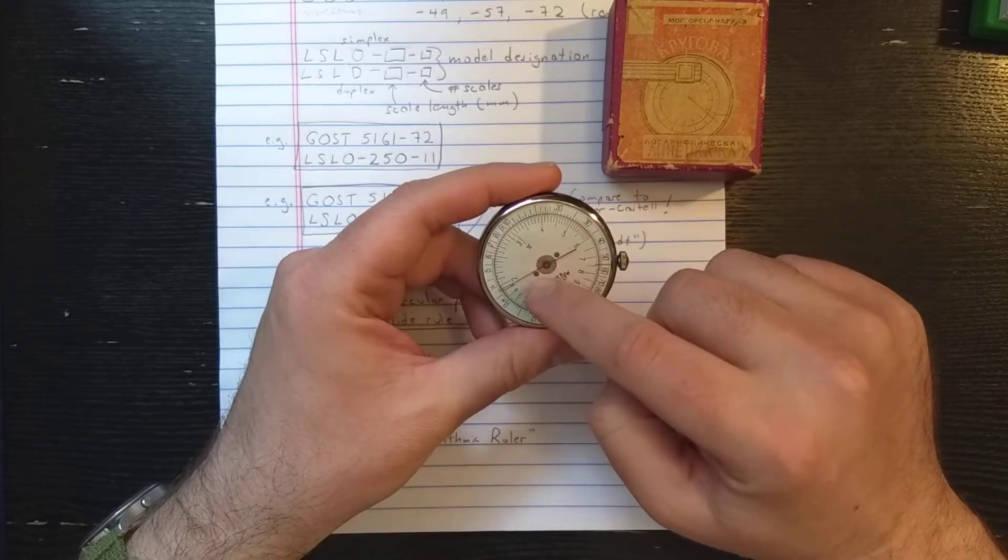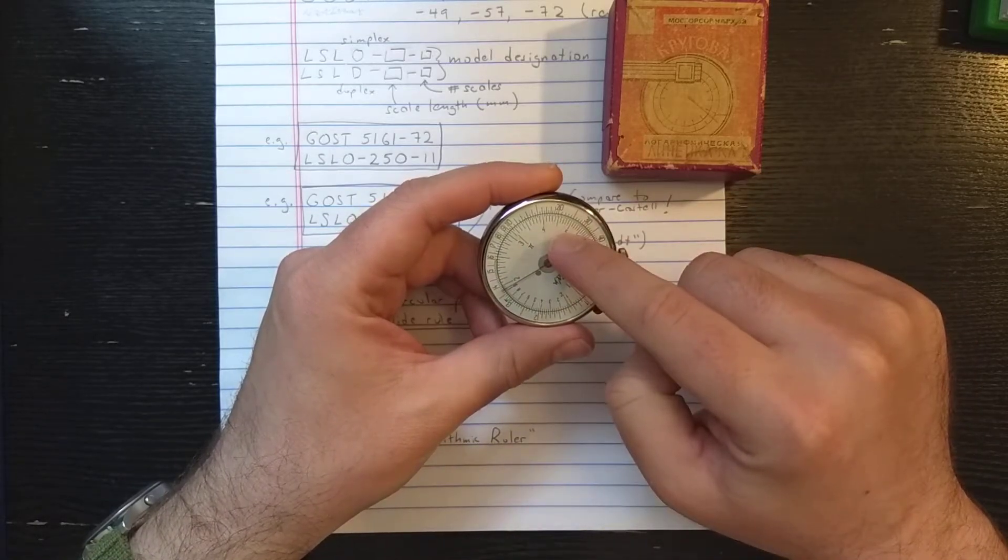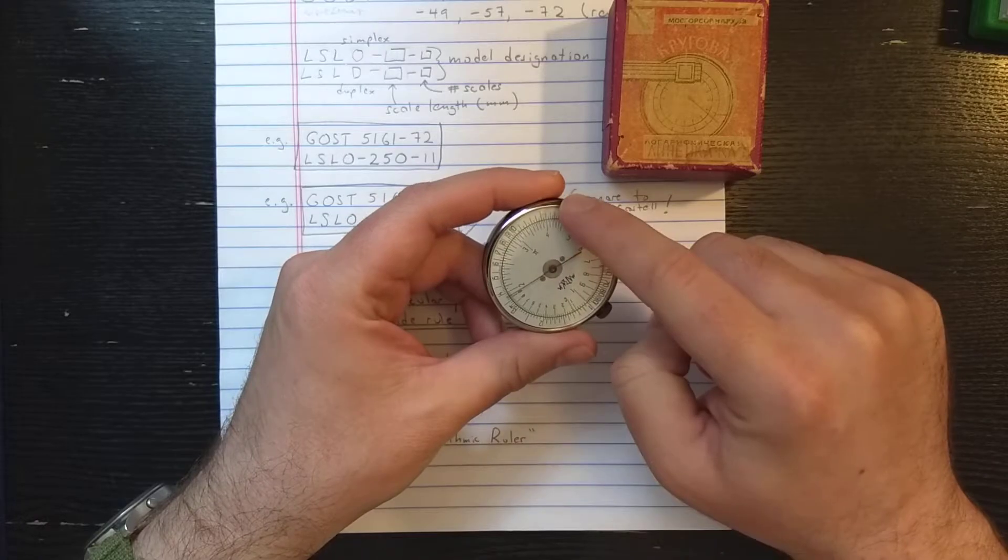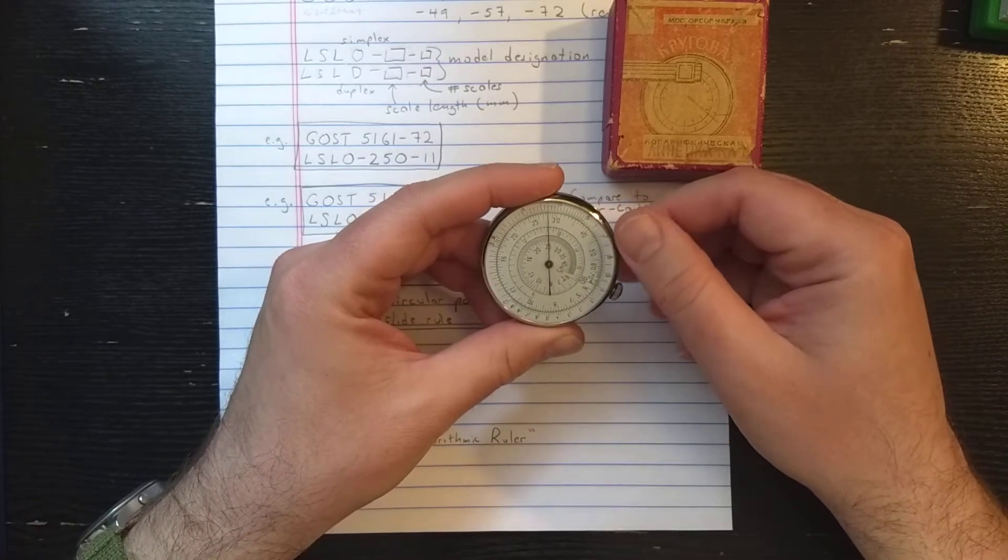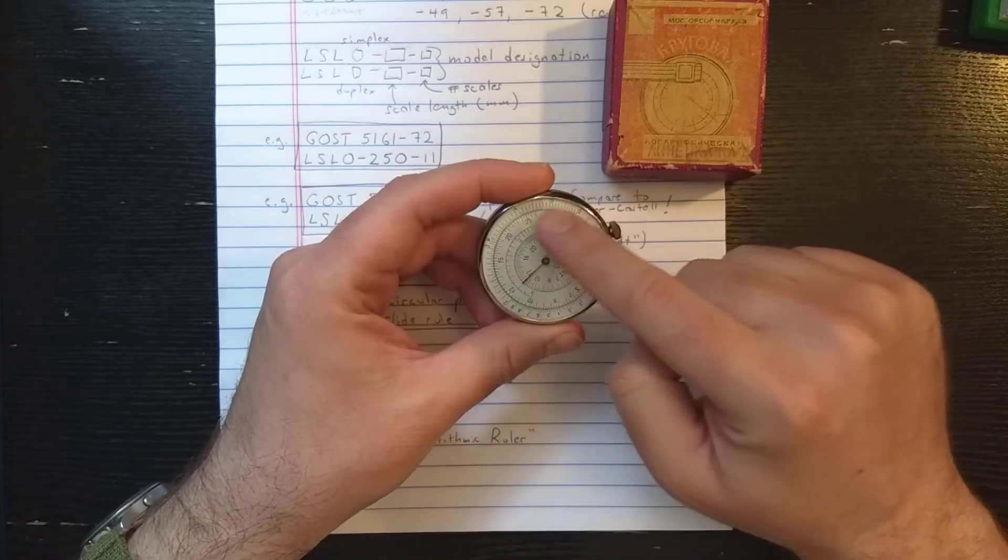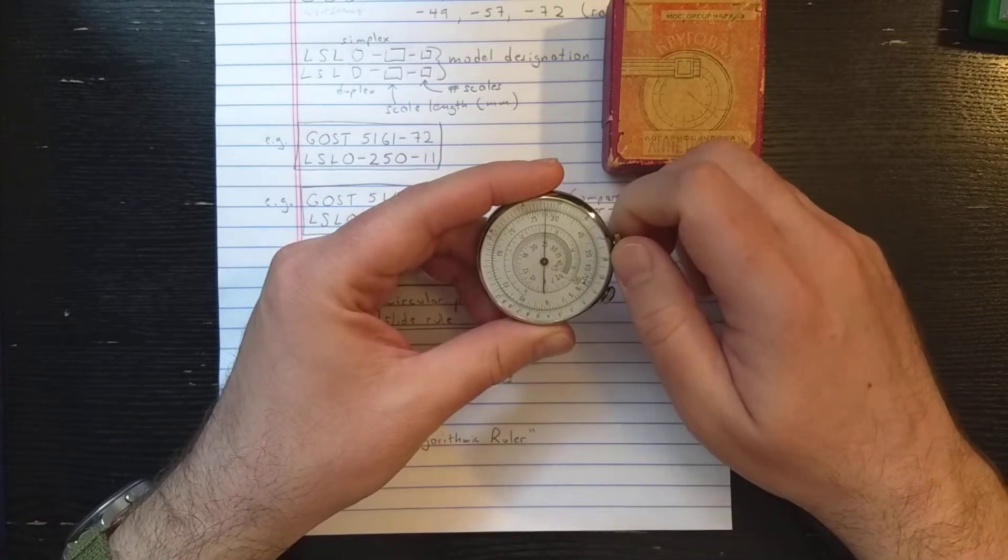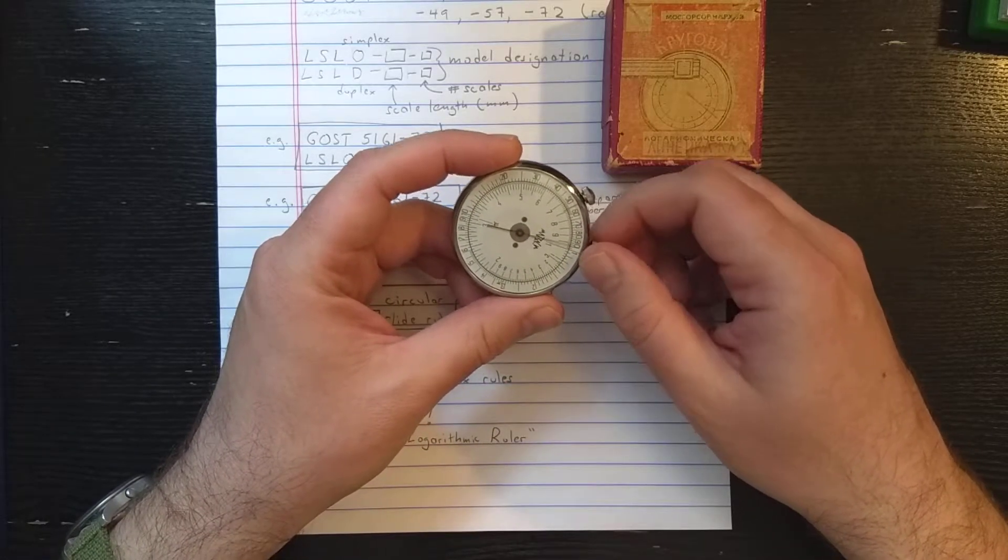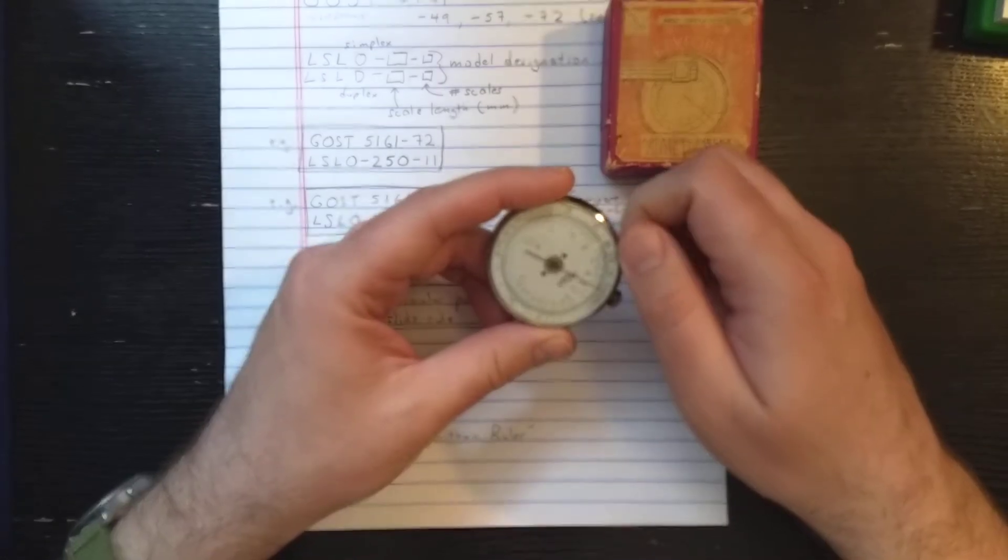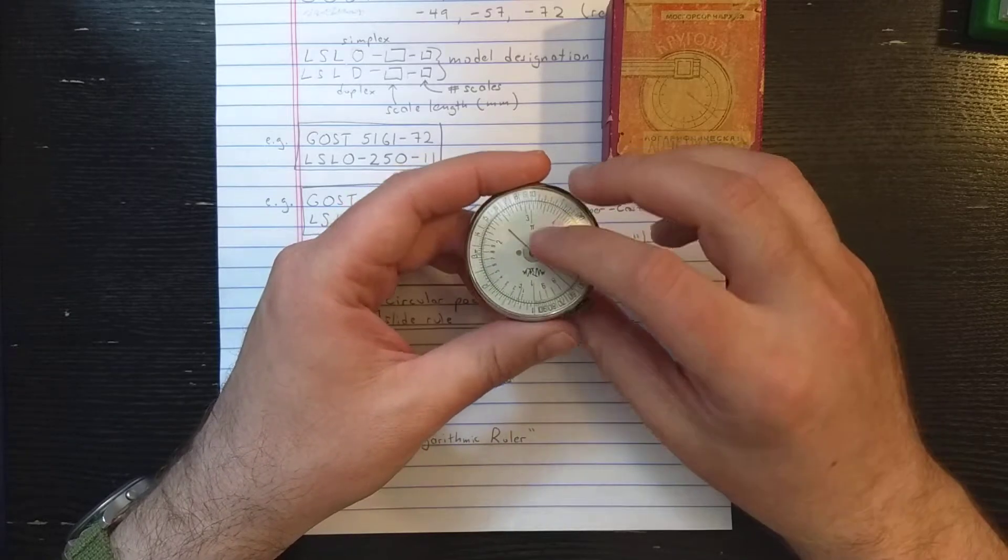But the scale layout is the same on all of them. So here, you have a single decade logarithmic scale inside, and the two decade here for doing squares and square roots. You have your trigonometric scales on the back. There's a logarithmic scale on the outside. The back face doesn't spin, only the needle spins. The needle's connected to the needle on the front face, and the entire front face can spin.